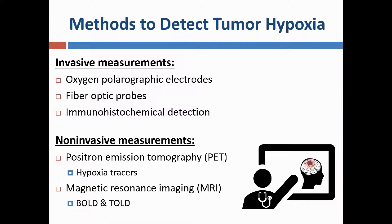As cancer therapy is significantly affected by hypoxia, a number of methods have been developed to measure and assess tumor hypoxia. Non-invasive imaging methods offer an important benefit to precision medicine for cancer treatment by providing the location of the hypoxic micro-regions throughout the entire tumor.